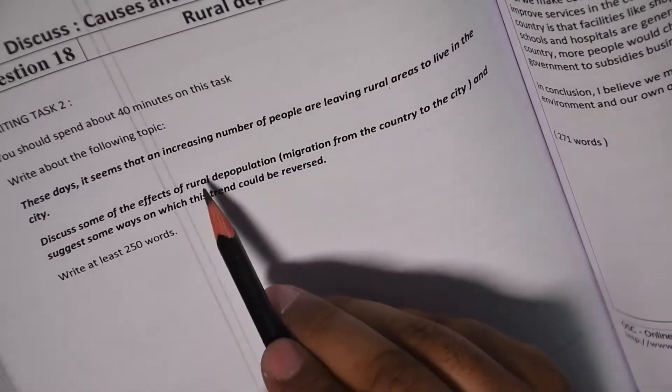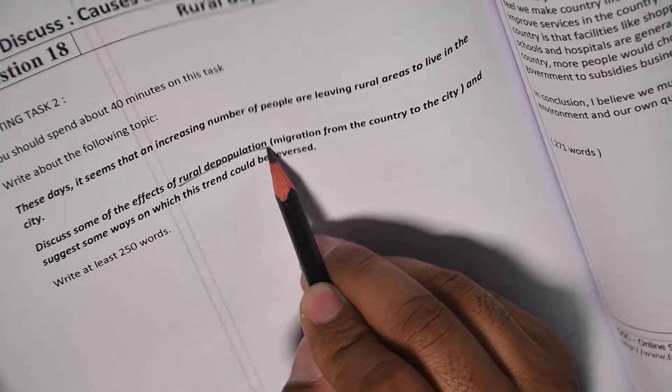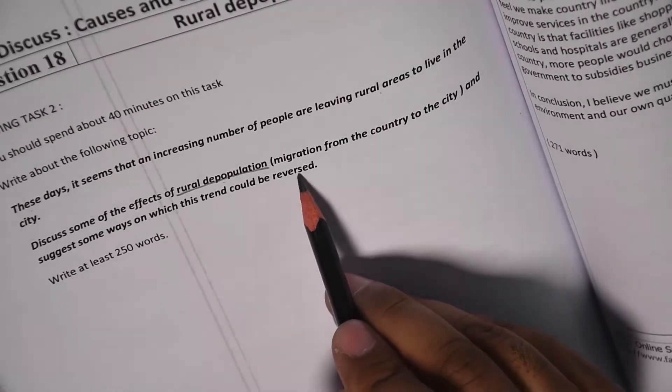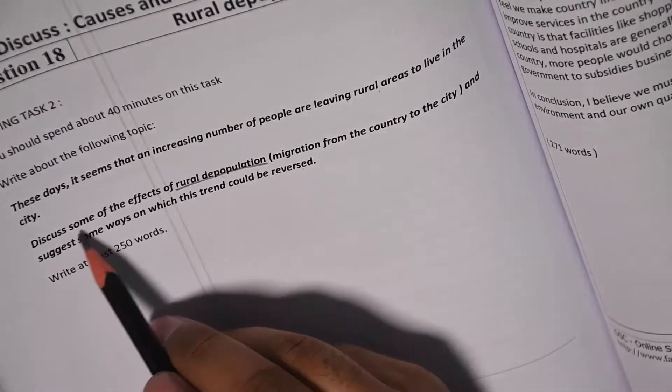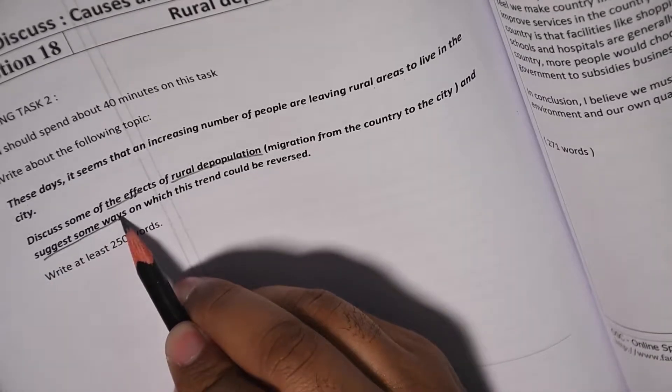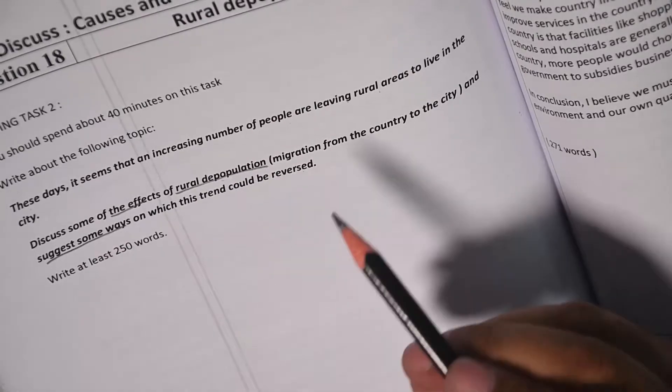This is very common, we also call it urbanization. Discuss some of the effects of rural depopulation, means migration from the country to the city, and suggest some ways in which this trend could be reversed. So basically you need to write some of the causes or effects and then the solution to that.